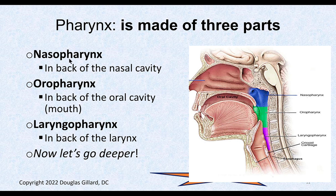There are three parts of the pharynx named after the cavities in front of them. Here's the nasal cavity, so that must be the nasopharynx. Here's the oral cavity — the mouth is the oral cavity — so this must be the oropharynx. Here's the larynx, the voice box, so this must be the laryngopharynx. The pharynx ends at the inferior part of the cricoid cartilage and becomes the esophagus — specifically, that's the upper esophageal sphincter, which we'll talk about next time.